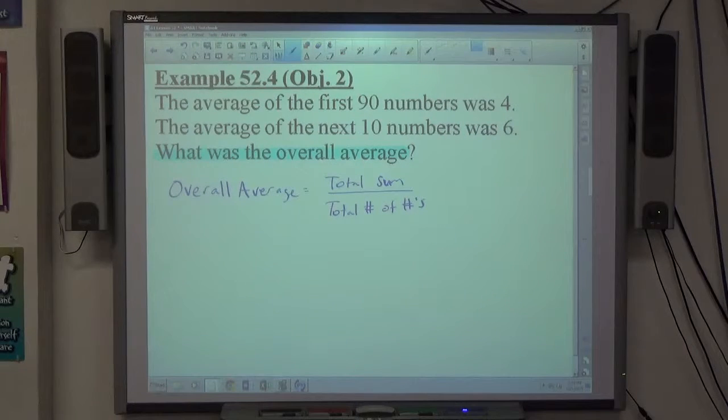So we have two things we have to identify to find the overall average. So if you're asked to find an overall average, just keep in mind: total sum, total number of numbers.